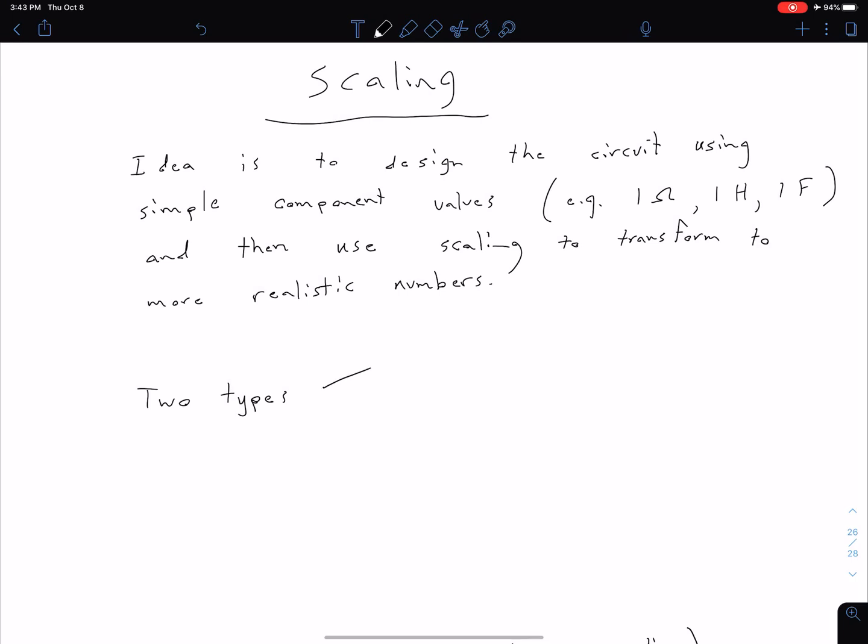In general, there are two types of scaling we're going to consider. One is magnitude scaling, where we're changing impedances in the circuit but leaving the frequency response the same. The second one is frequency scaling. You can also do a combination of both magnitude and frequency scaling at the same time. That's the most general case.